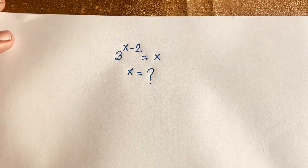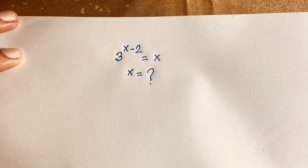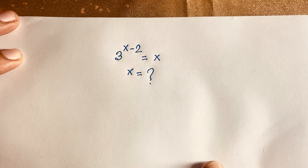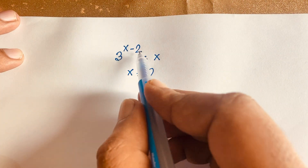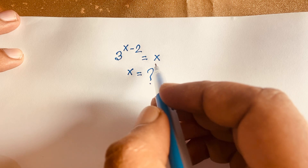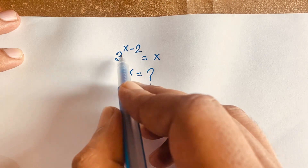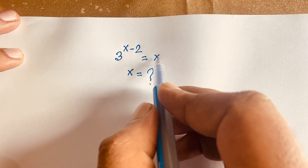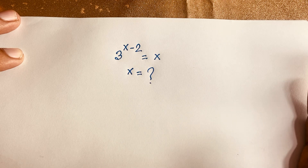Hello everyone. In this video we have solved this Peru Maths Olympiad question: 3 to the power x minus 2 is equal to x. What is x? First, if you think x is equal to 1, then 3 to the power 1 minus 2 is not equal to 1. But if you think x is equal to 3, you can see easily that 3 to the power 3 minus 2 equals 3. So x is equal to 3.